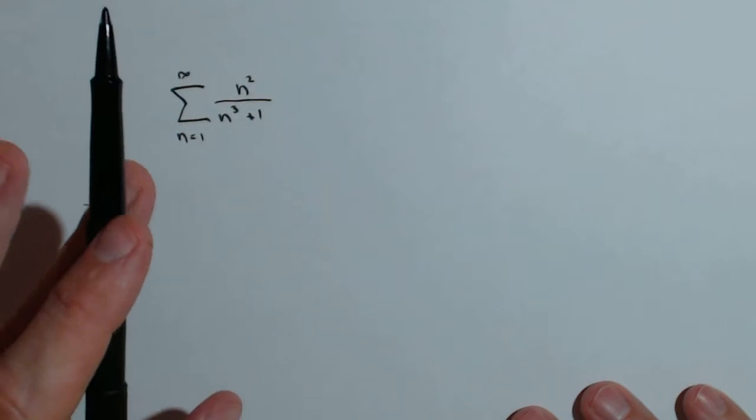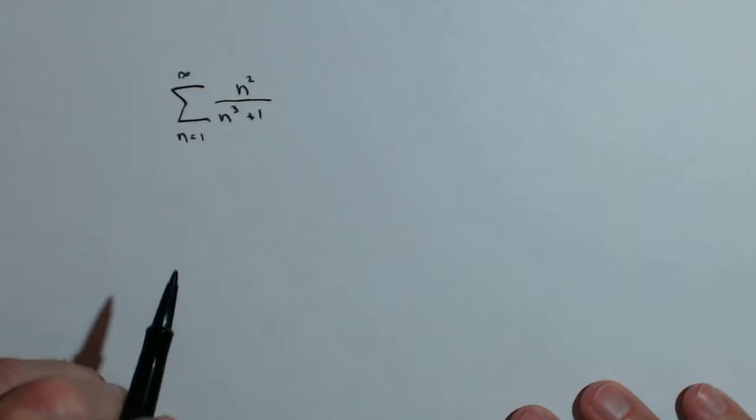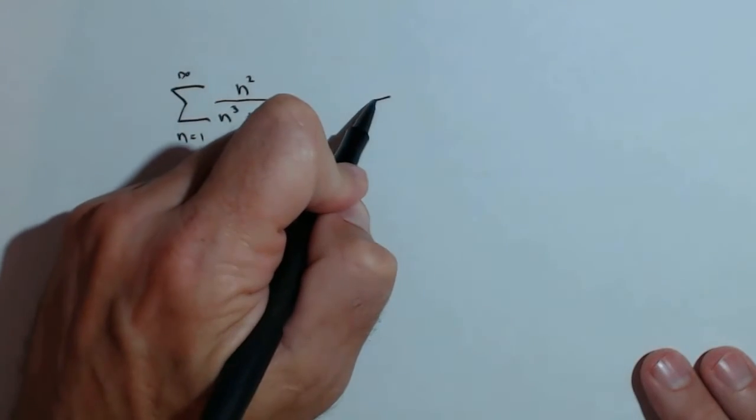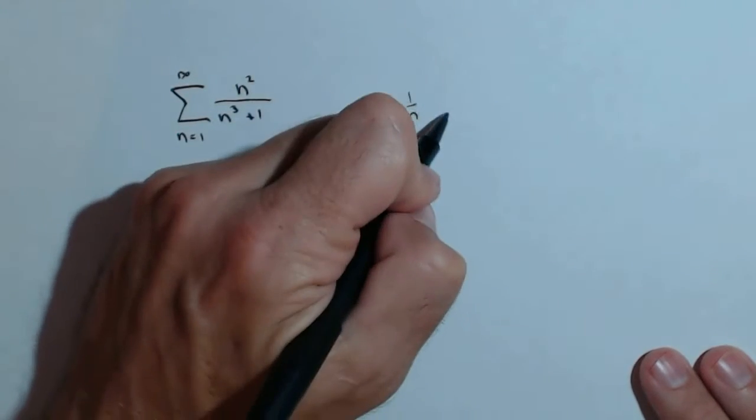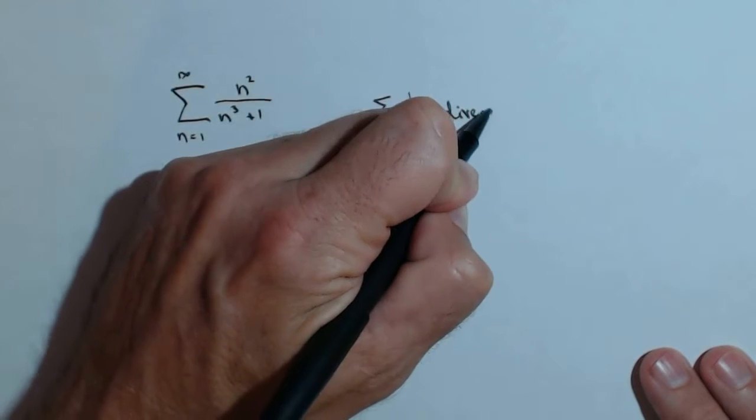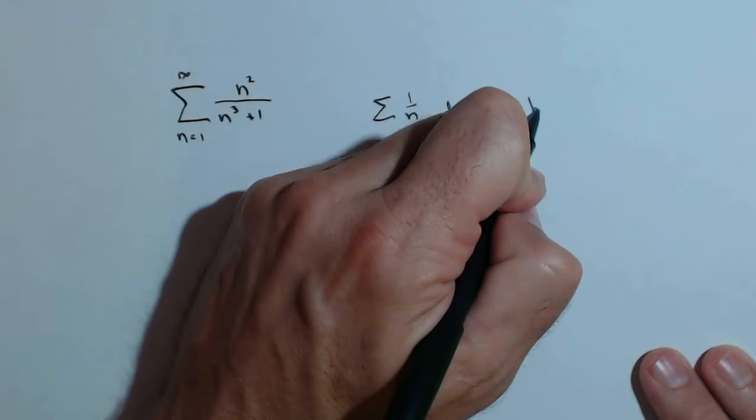You're right, but we need to show that formally. So here's a nice, easy way. We do know that the series 1 over n diverges by our p series.